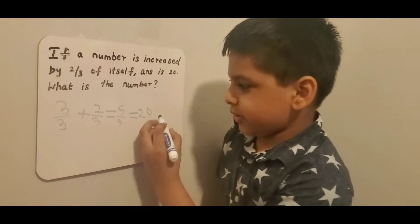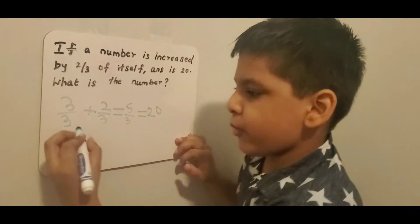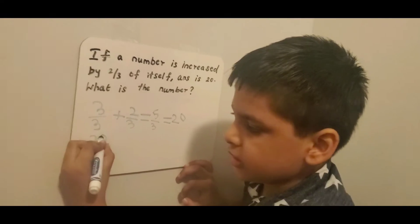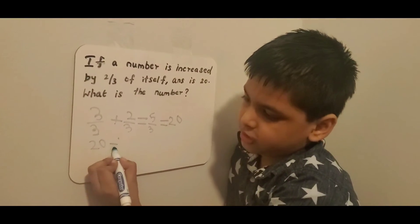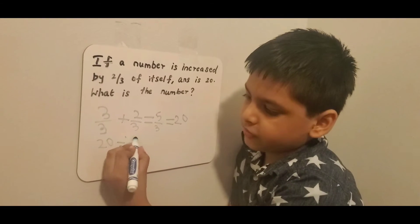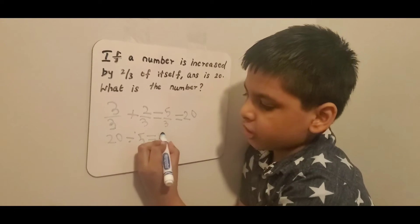So we should now do 20 divided by 5, which equals 4.